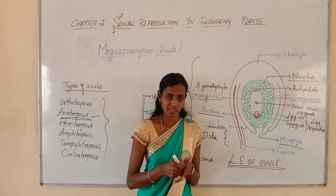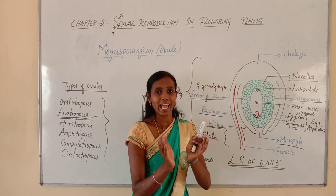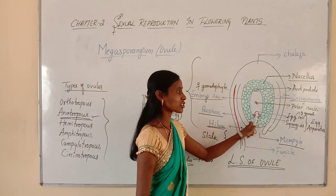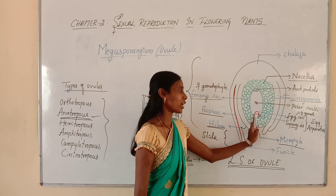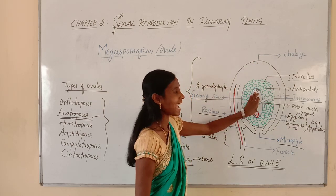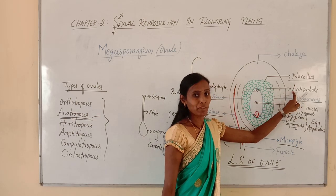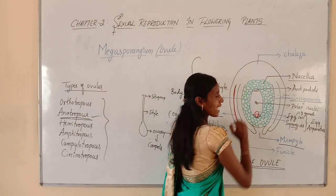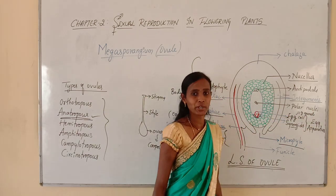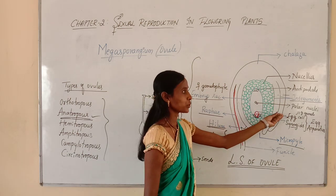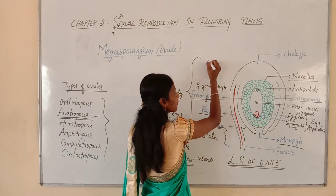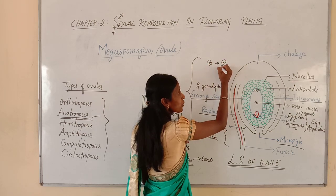You may get a question: write a note on egg apparatus. Egg apparatus is a group of three cells present towards the micropylar end, which contains a larger central egg cell that is the female gamete, and two pear-shaped cells called synergids. Within the embryo sac, towards the chalazal region, we can find another three cells called antipodals. In the middle of the embryo sac, there are two nuclei called polar nuclei. Initially they are two separate polar nuclei; later these two polar nuclei fuse to form one diploid nucleus.